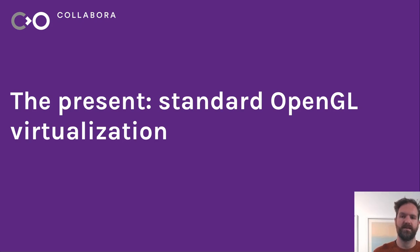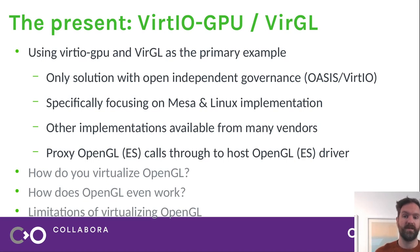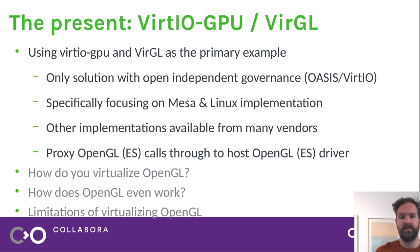Taking a closer look at how we do API virtualization today — this is one of the most widespread approaches and the most standard and portable. VirtIO, the standard from OASIS, is a completely vendor neutral solution, and this includes VirtIO GPU as well as something called Virgil. I'll be talking about the Mesa and Linux implementation of this specifically. There are other implementations in other operating systems and hypervisors, but since the Mesa and Linux implementations are the open source ones available to us, that's what I'll focus on.